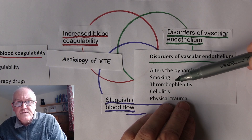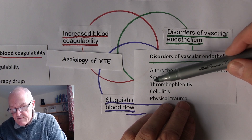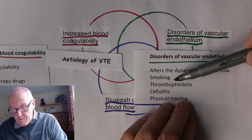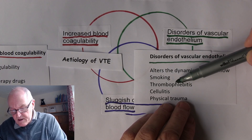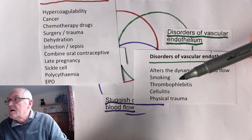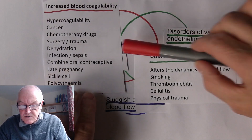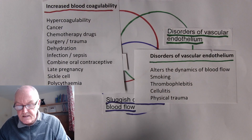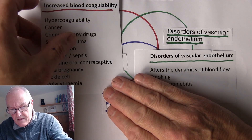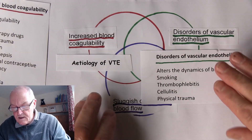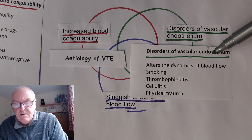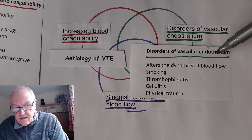Smoking, because of the toxins in smoke, can actually damage the vascular endothelium directly. And that's one of the reasons why there's increased coagulability in smoking. We could also have listed smoking under increased coagulability, because smoking is going to increase platelet viscosity and thrombocyte adherence. So the message is: don't smoke, because it can damage the vascular endothelium as well as increasing coagulability.